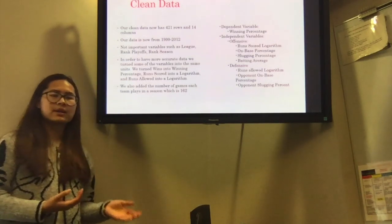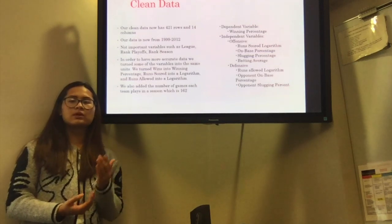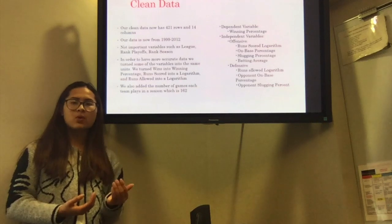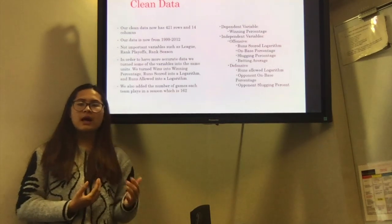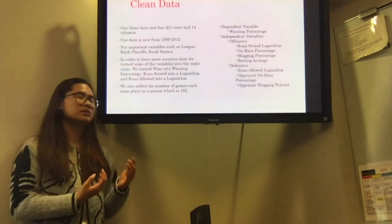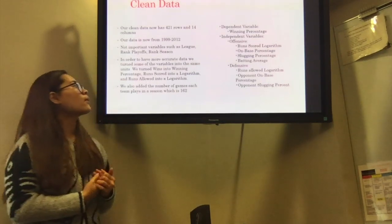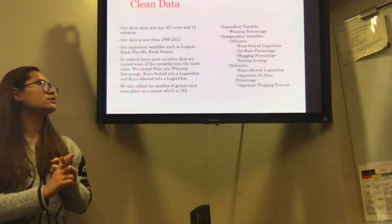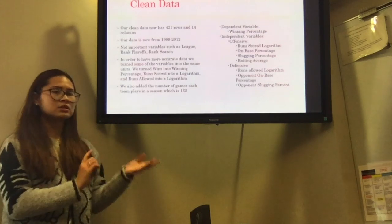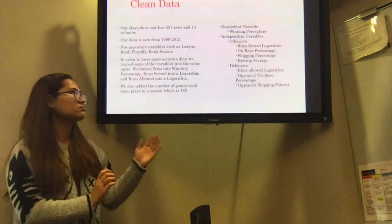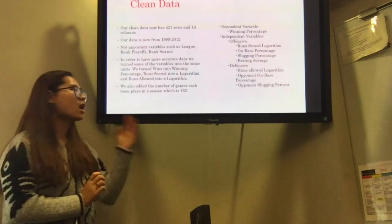By doing this, we shortened our time frame from 1999 to 2012, and we also removed variables that are not important such as league, ranked playoffs, or ranked season. In order to have more accurate data, we turned some of our variables into some units, such as we turned wins into winning percentage, and run scores into logarithms, and run allowed into logarithms as well. We also added the number of games each team plays in a season, which is 162. For our dependent variable, which is winning percentage, and for our independent variables, it has two different focuses: offensive and defensive. Offensive has run score logarithms, on base percentage, slugging percentage, and batting average. And for defensive, we have run allowed logarithms, opponent on base percentage, and opponent slugging percentage.